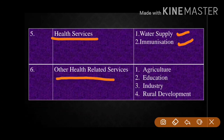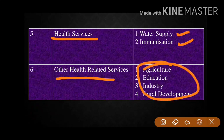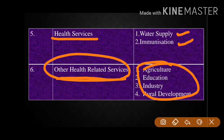Regarding industry, the government should ensure that industries follow rules to reduce pollution and treat effluents before releasing them into water bodies or the atmosphere. Rural development is also important — the government should ensure rural development takes place. All these things are related to health in one way or another, which is why they are called other health-related services. These should be provided to each and every individual.